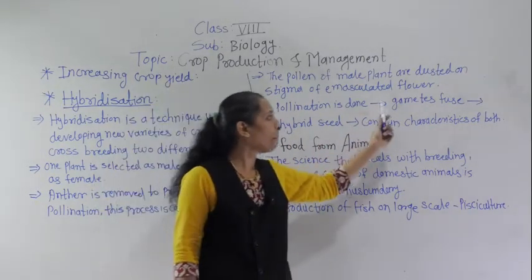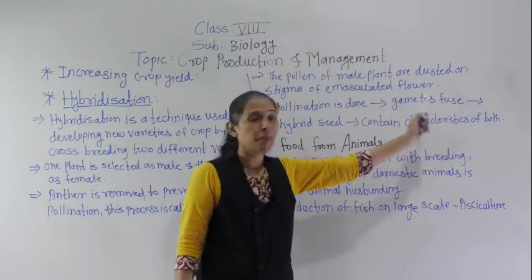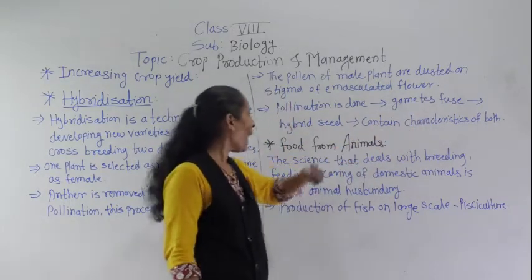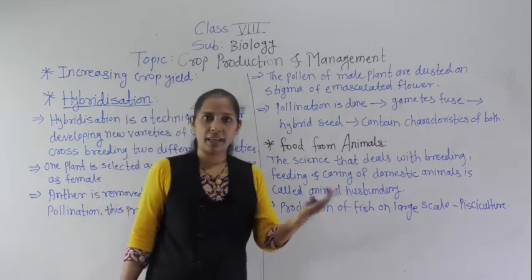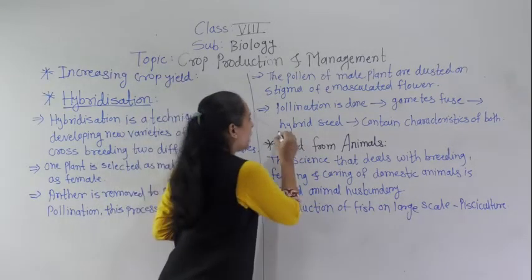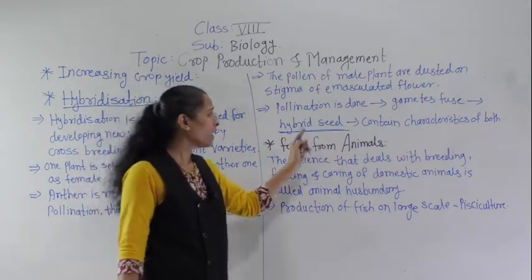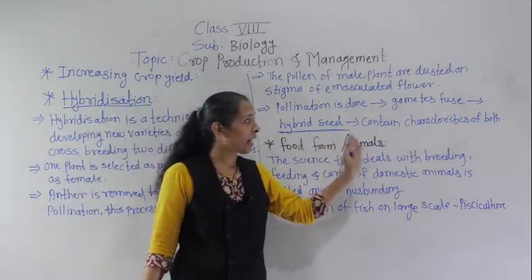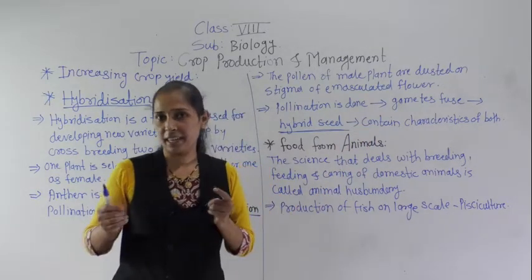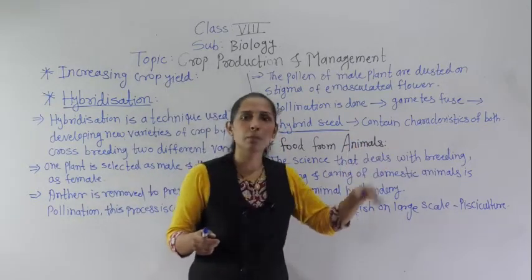After pollination, the male and female gametes are fused, and they produce a new variety called a hybrid seed. This hybrid seed contains the characteristics of both the male and female varieties — the characteristics of both parents that were selected.